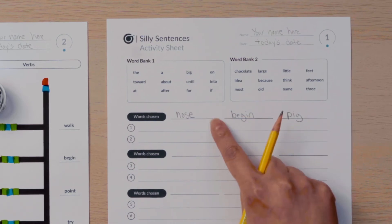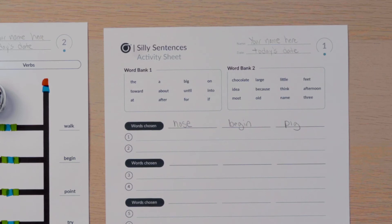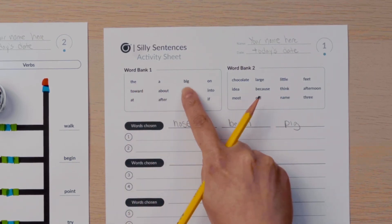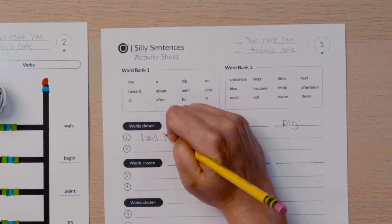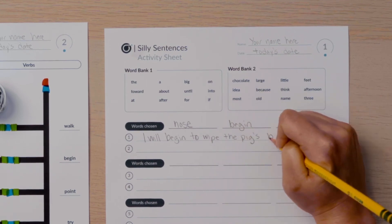My Ozobot chose nose, begin, and pig. I will use the article the in my sentence. I will also use the word big in my sentence to make it more comical. My sentence is, I will begin to wipe the pig's big nose.